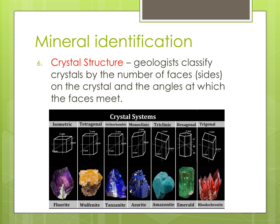Number six, crystal structure — which we mentioned before — is a way we identify a mineral. Geologists classify crystals by the number of faces or sides on the crystal and the angles at which the faces meet. You can see different crystal systems in the picture, with different numbers of faces and different angles. Remember, these form naturally as the atoms align themselves.